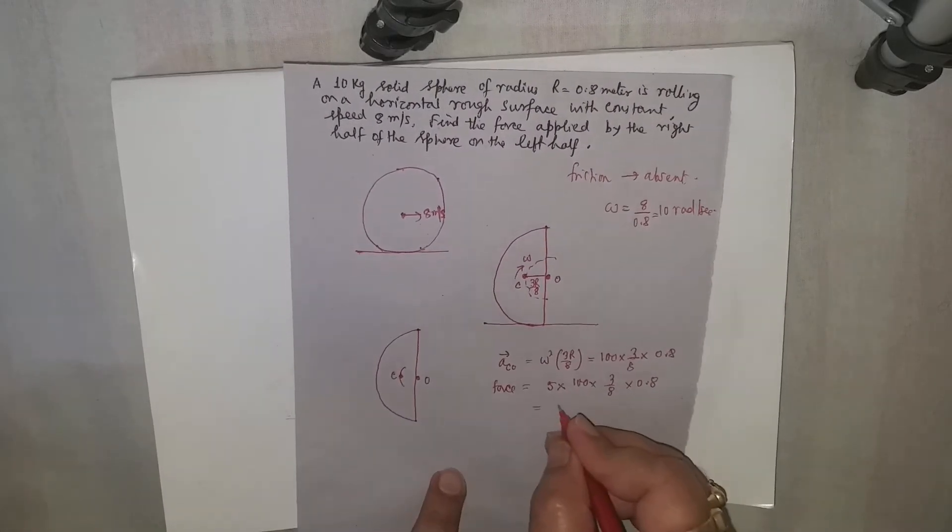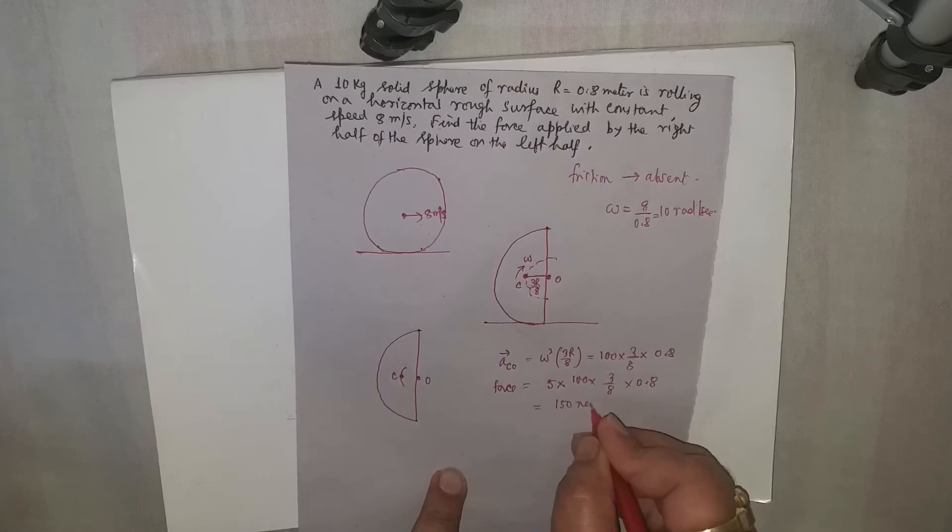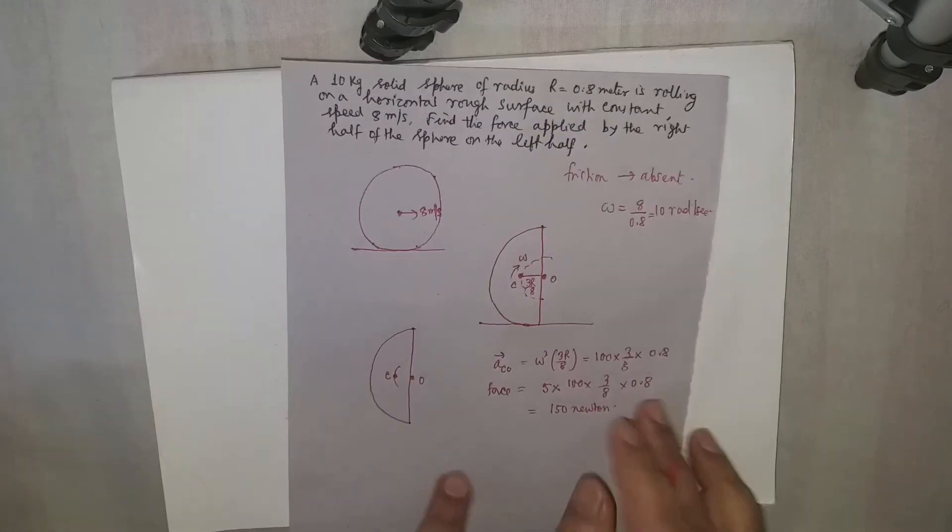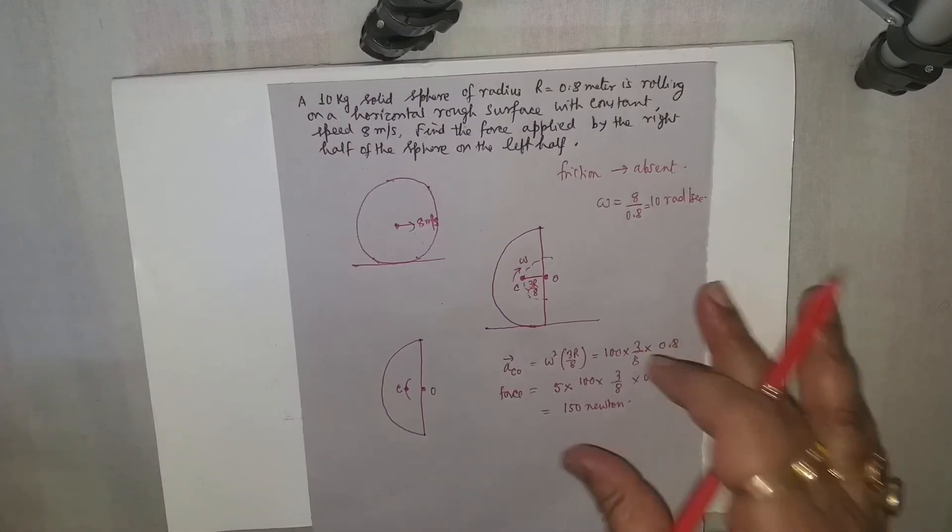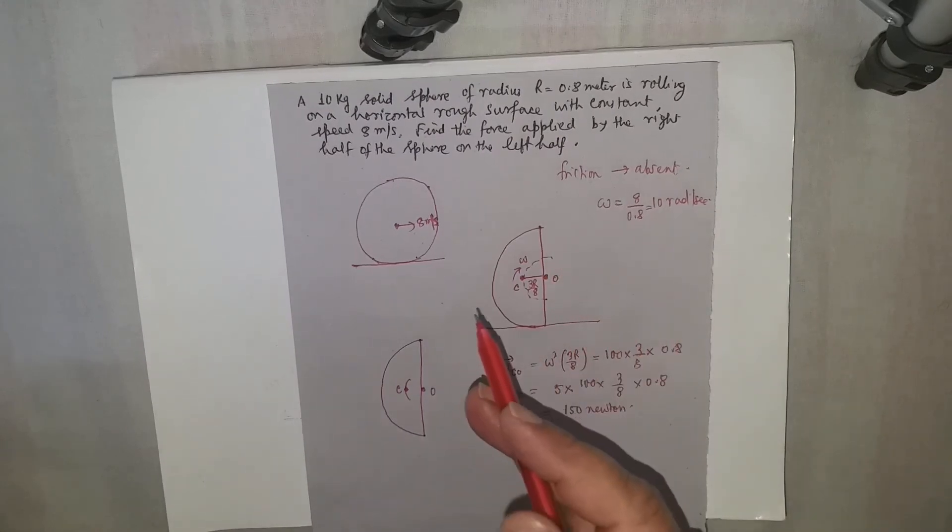So calculation says that it is 150 Newtons. Therefore, the force exerted by the right part on the left part, or vice versa, will be equal to 150 Newtons.